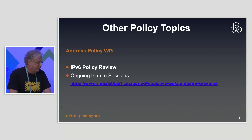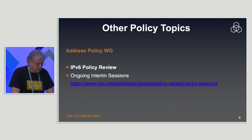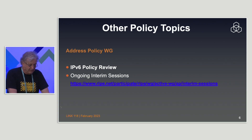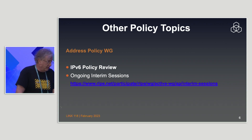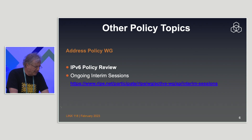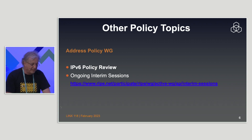On other policy topics: IPv6 is having some discussion, but there are no actual policy proposals in the offing at the moment. They are holding discussions online — not just on mailing lists and not just at RIPE meetings. More online sessions are planned to discuss IPv6 policies. The minutes and recordings of these will be available; the first session took place in February and the minutes will be available soon.